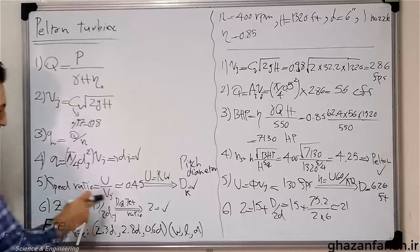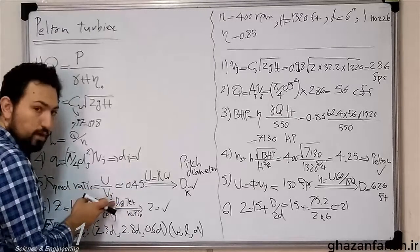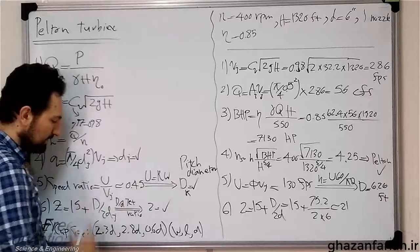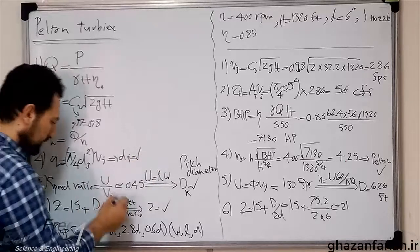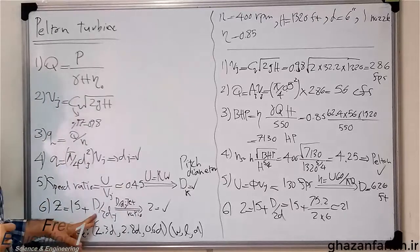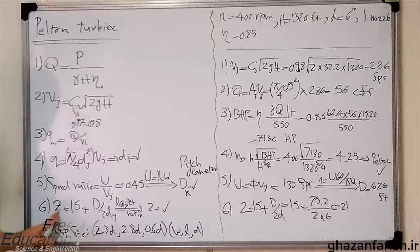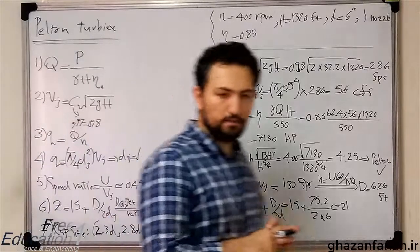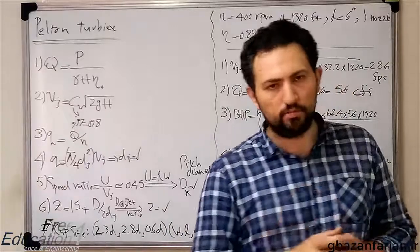The ratio of D and Dj is called the jet ratio. The jet ratio, the ratio of D, the runner diameter or the pitch diameter, and the jet diameter, is called the jet ratio. So, the jet ratio plus 15 is our recommendation for the number of cups or buckets.